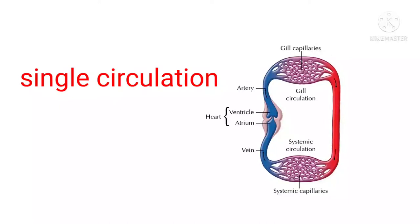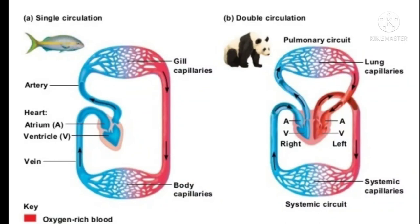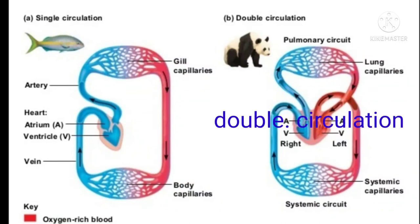In double circulation, blood passes through the heart twice — between the heart and lungs, and from the heart to other body parts. The best examples of double circulation are amphibians, reptiles, birds, and mammals.